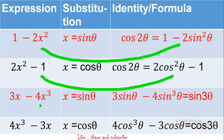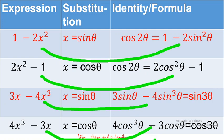For expressions related to triple angle formulas, wherever you see a coefficient of 3 appearing first — like 3x − 4x³ — substitute x = sinθ, matching sin 3θ = 3sinθ − 4sin³θ. Where 4 comes first — like 4x³ − 3x — substitute x = cosθ, matching cos 3θ = 4cos³θ − 3cosθ. It is that simple: if 3 is first put sinθ; if 4 is first put cosθ.